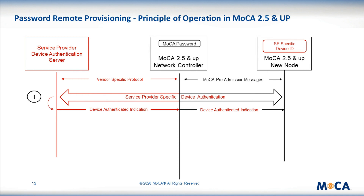The sequence to provision MoCA 2.5 and up devices is almost identical to the sequence for MoCA 2.0, except for one step. The vendor or service provider specific protocol needs only to authenticate the new device, but does not need to transport the network password. Let me detail why. First, the new device needs to be authenticated. This initial step is identical to the authentication step described previously for MoCA 2.0 devices, and in fact is common for all MoCA devices. This device authentication can be performed with the same vendor or service provider specific protocol and credentials, regardless of the MoCA version of the device to provision.